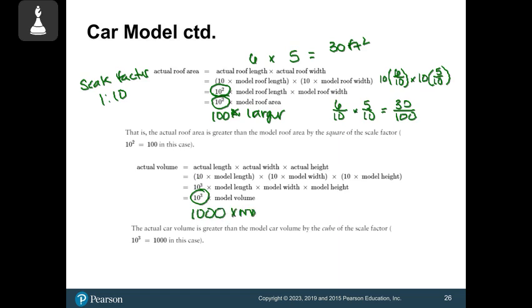So the scale factor works consistently: for length it's 1 to 10, for area it's 1 to 100, and for volume in this case it's 1 to 1,000.